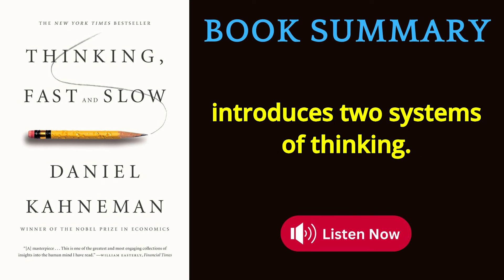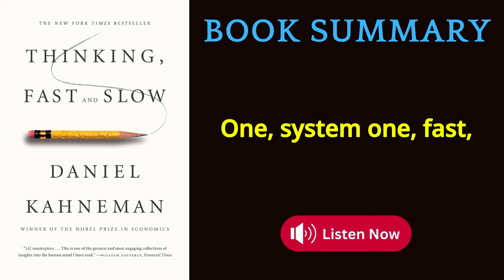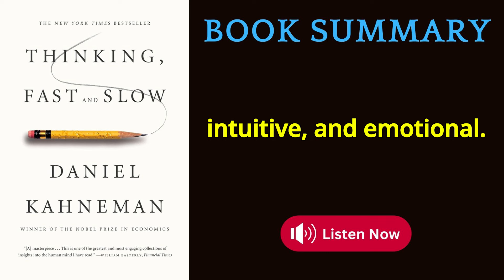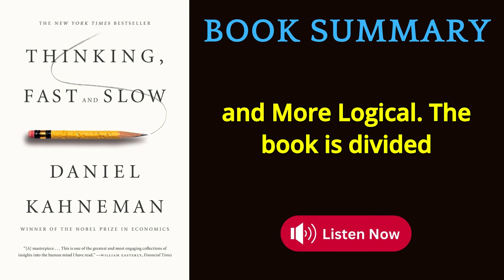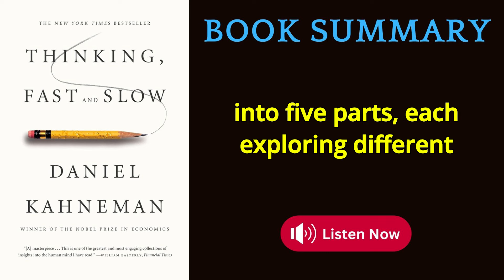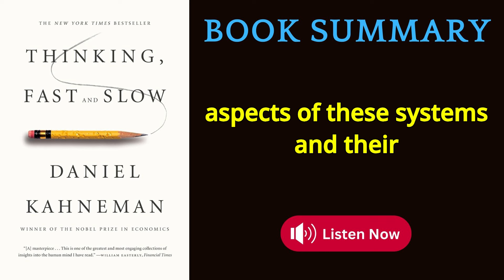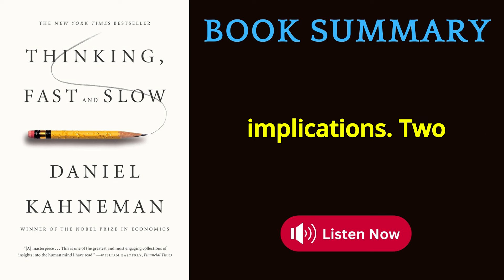Kahneman introduces two systems of thinking: System 1, which is fast, intuitive, and emotional; and System 2, which is slower, more deliberative, and more logical. The book is divided into five parts, each exploring different aspects of these systems and their implications.